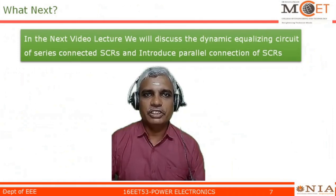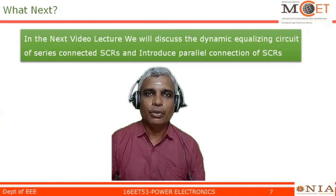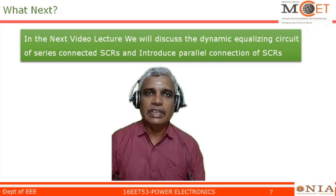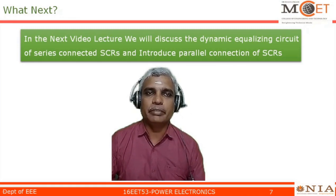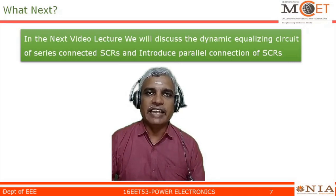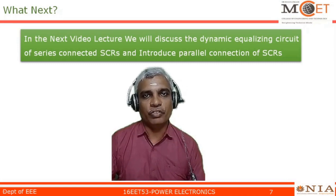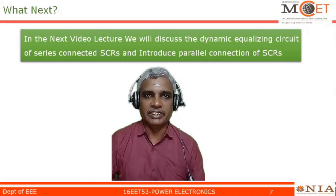In this lecture we discussed the necessity of series and parallel connections of SCRs, the voltage imbalancing problem in series connections, and its solution using a static voltage equalizing circuit by placing a resistance R across each series-connected SCR. We also discussed the utilization factor determined using string efficiency. In the next lecture we will cover dynamic equalization of series connected SCRs and parallel operation of SCRs. Thank you for your patience listening.